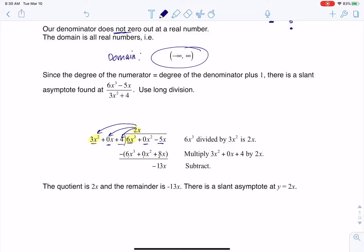I get 6x cubed plus 0x squared plus 8x. But I have to remember that I need to subtract all of that. So really I have minus 6x cubed, and then I have minus 8x.